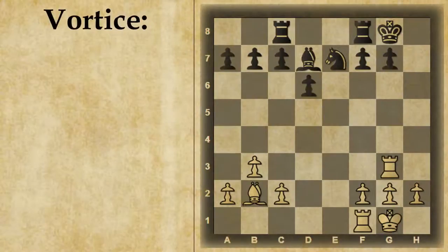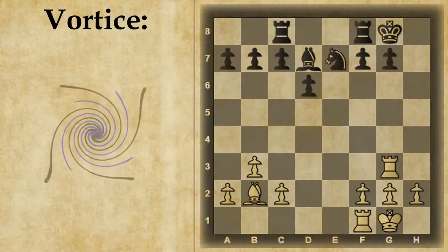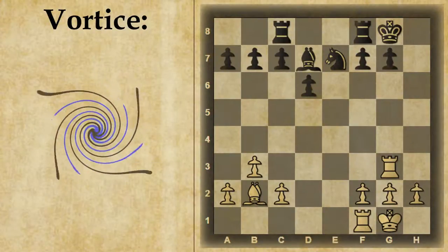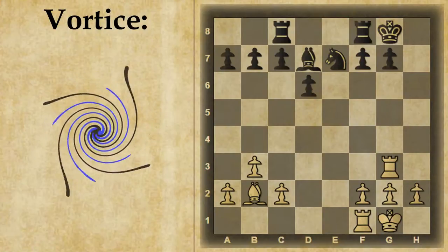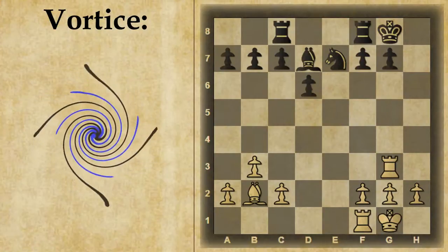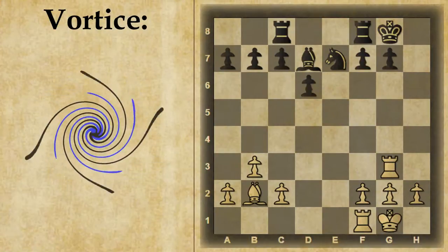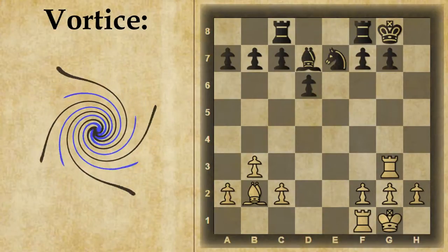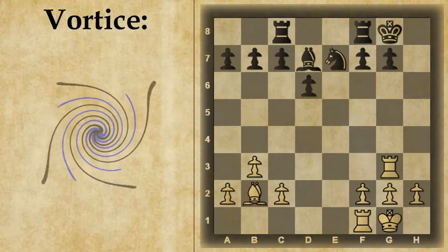Vediamo in questo video di analizzare il termine scacchistico detto vortice. Dalla parola si capisce in qualche modo che con un vortice si può mettere in difficoltà l'avversario, perché entra in un vortice. È un po' come se entrasse in un vortice di schiaffi dati da un paio di pezzi che agiscono in coordinazione.